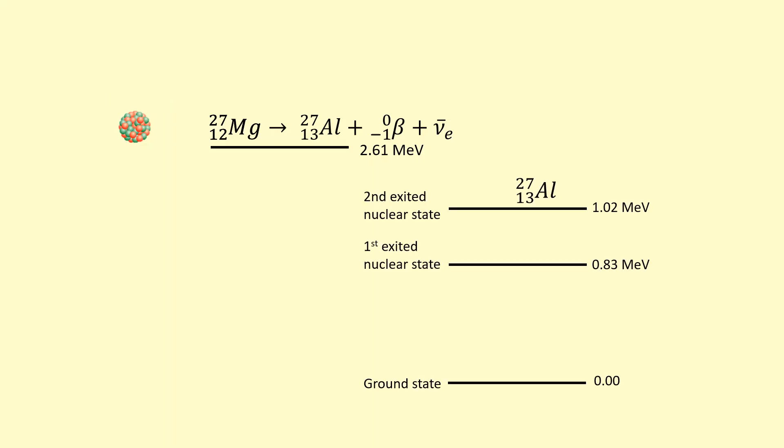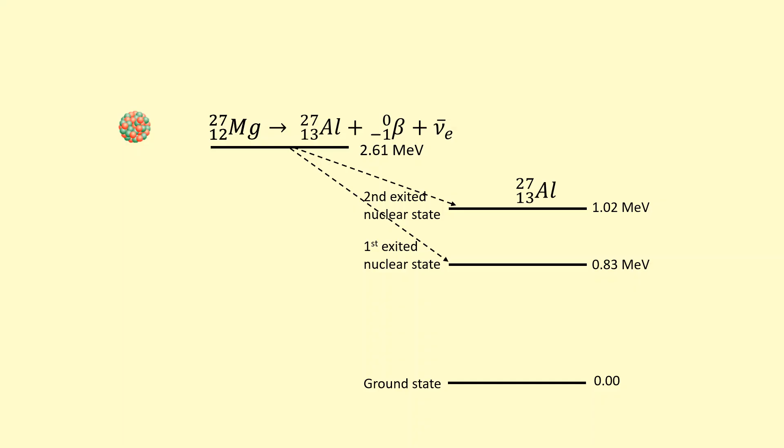Now the aluminium can be formed in an excited nuclear state. So it can be either formed in the second excited nuclear state, or the first excited nuclear state. It could also be formed in the ground state, but in that case it won't emit a gamma photon.